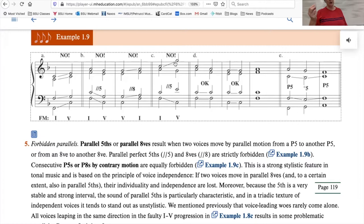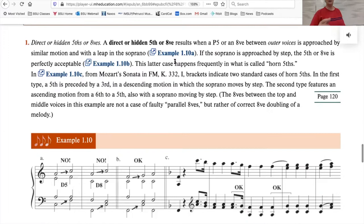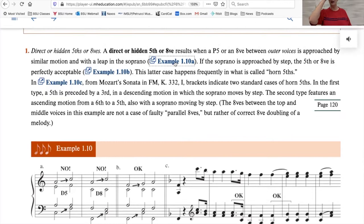A second error that's somewhat similar, maybe not quite as bad as the parallels, but it has the same effect of robbing the voices of their independence. That would be when we approach one of these perfect intervals by similar motion between the soprano and the bass, and the soprano is moving by leap. We call that a direct perfect fifth or a direct perfect octave. Let me repeat again what's involved in a direct perfect fifth or a direct perfect octave. This happens between the outer voices always, between the soprano and the bass. If those two voices move into a perfect interval by similar motion, and if there's a leap in the soprano, it winds up emphasizing that perfect interval in a not very pleasant way, and that's what we call a direct fifth or direct octave.